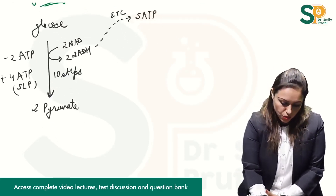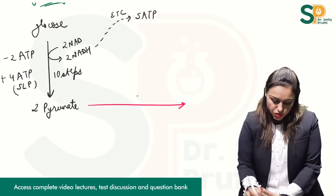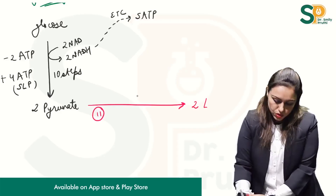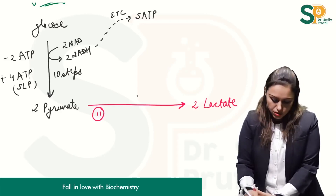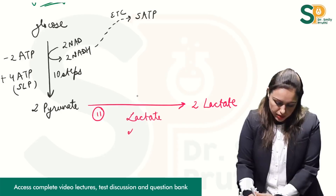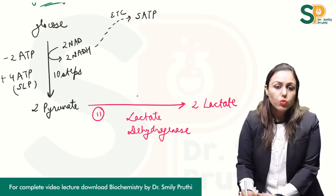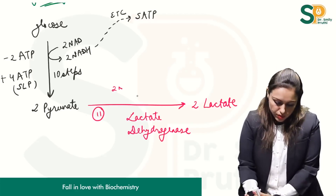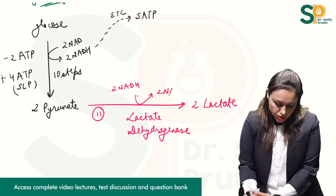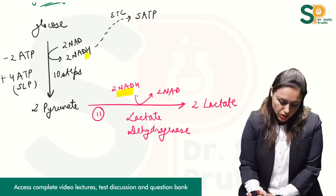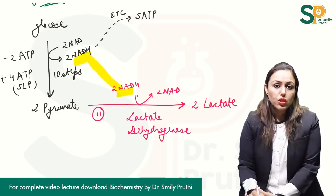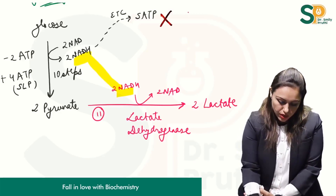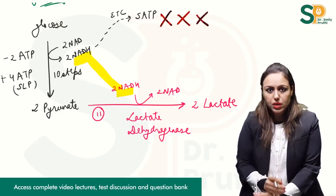In case of anaerobic glycolysis, one extra step — the 11th step — occurs: 2 pyruvate gets converted to 2 lactate. The enzyme here is lactate dehydrogenase, which converts NADH to NAD. So 2 NADH gets converted to 2 NAD. These 2 NADH are used in this last step, and therefore we are not getting those 5 ATPs in case of anaerobic glycolysis.